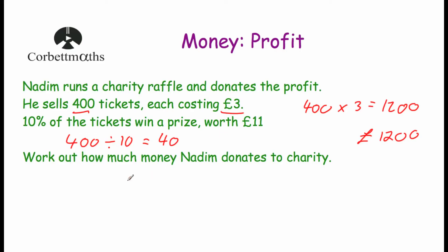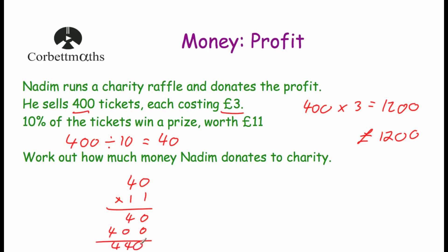Let's take our 40 and multiply that by £11. So 1 times 0 is 0 and 1 times 4 is 4. Multiply by 10: put our 0 down, 1 times 0 is 0, 1 times 4 is 4. So our answer is £440. That means Nadeem's prizes cost him £440.